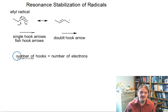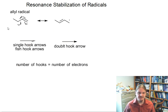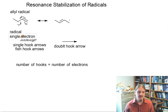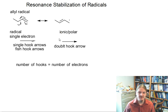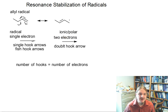In radical processes, we are often talking about a single electron moving. In ionic or polar processes, which is the type you're more familiar with, we have two electrons, or electron pairs, that we're talking about.